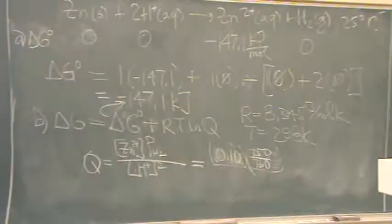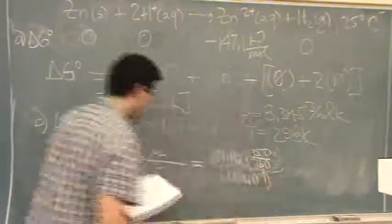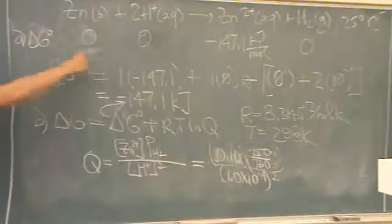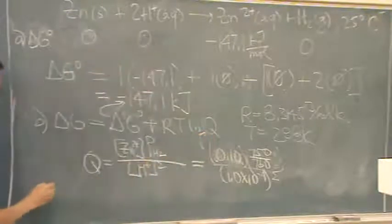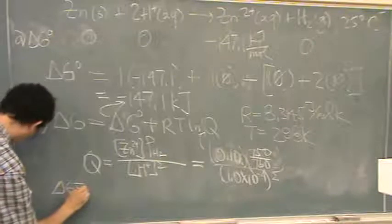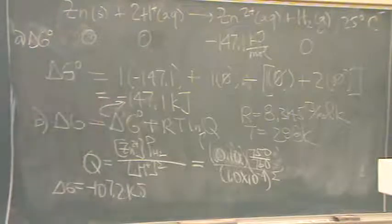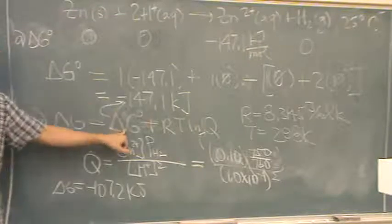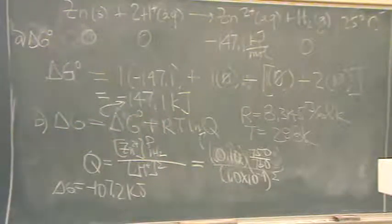That was actually the only thing correct. 0.10 divided by H plus concentration, 1.0 times 10 to the minus 4. Q is going to end up being a number, that number. And I have to square this because H plus is squared. There's two H pluses. And so this is Q. You're going to get a delta G equal to minus 107.2 kilojoules. You need to convert this usually into joules because R is in joules. So it's the same unit. That will always happen.